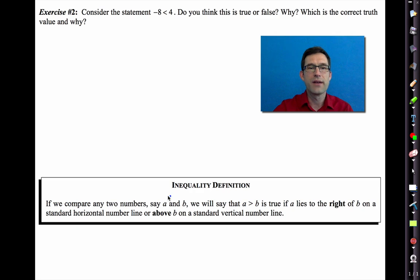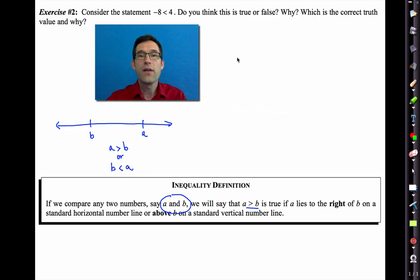All right. It's this simple. If we compare two numbers, A and B, we will say that A is greater than B if A lies to the right of B on a standard horizontal number line. In other words, if I've got B sitting here and I've got A sitting here, then we say A is greater than B or we say that B is less than A. On the other hand, if we orient the number line vertically and A is above B, then we say that A is greater than B or we say that B is less than A.